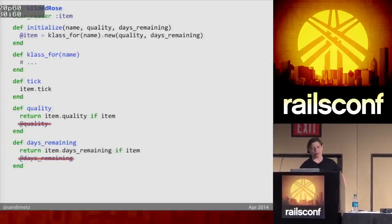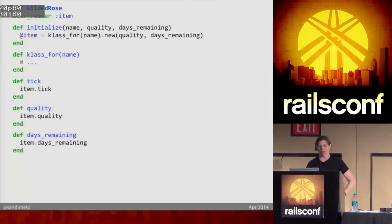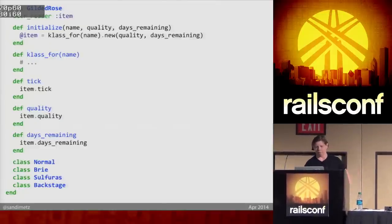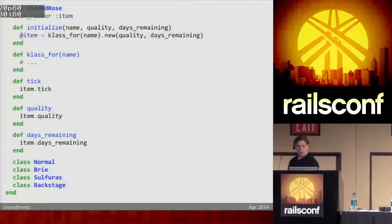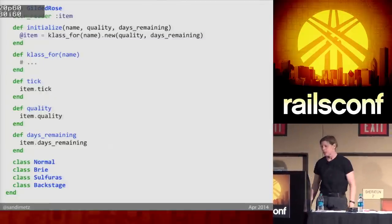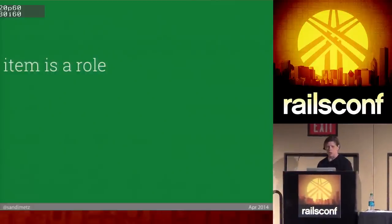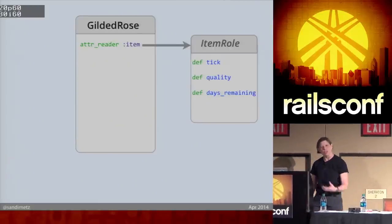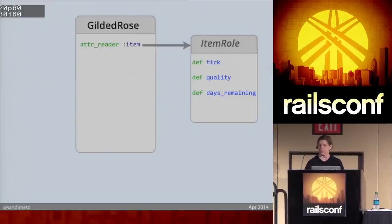I have items in every case, so I'll get rid of all that. Here's the whole body of code: I'm holding an instance of the correct item object and I just send it the tick message. We have four different kinds of item classes, but from Gilded Rose's point of view, item is a role. You just need someone in there that can answer that API — it's a duck type, if you will.